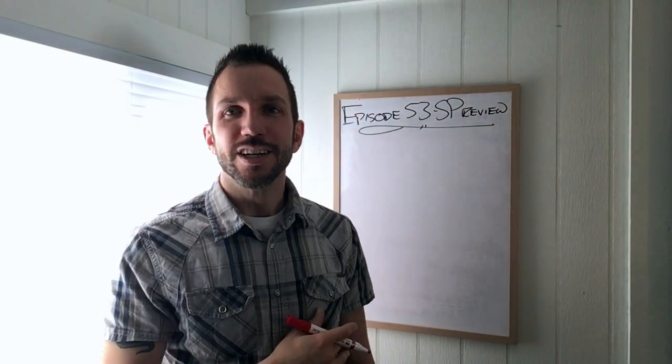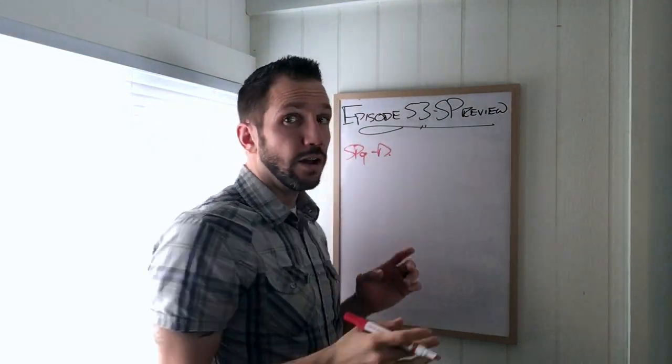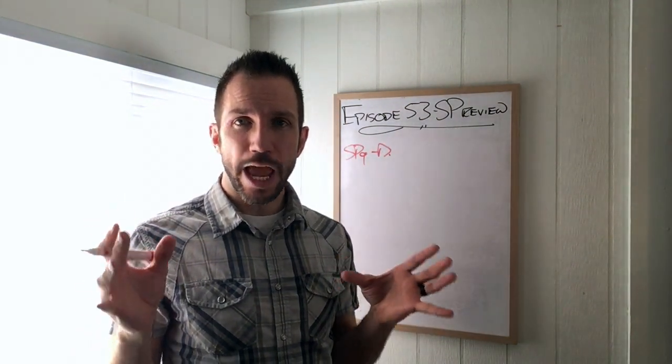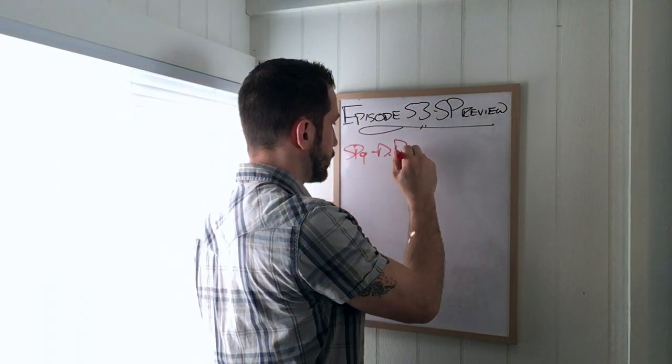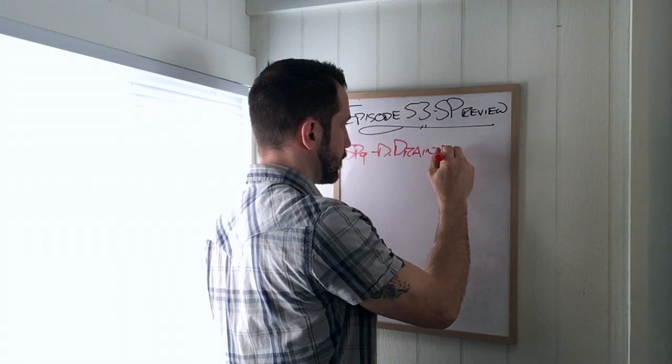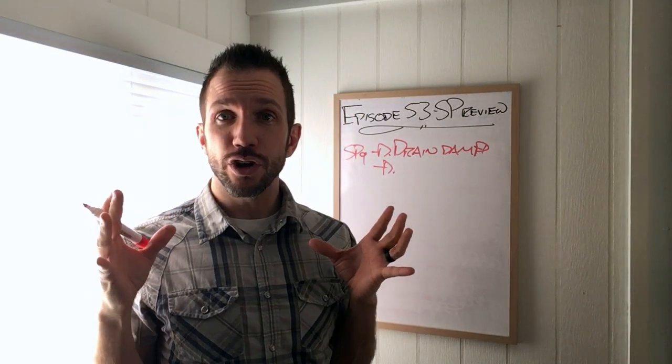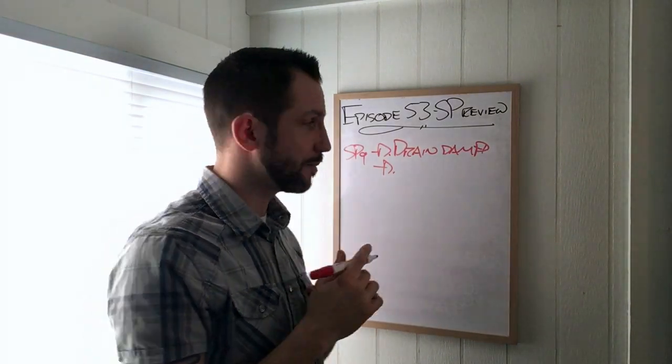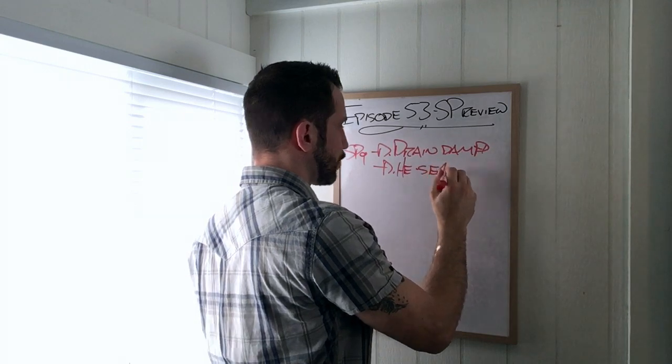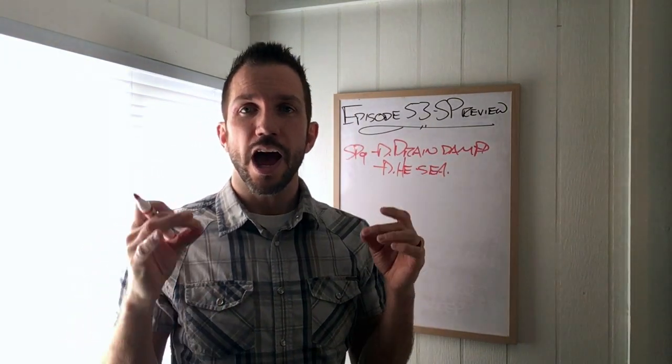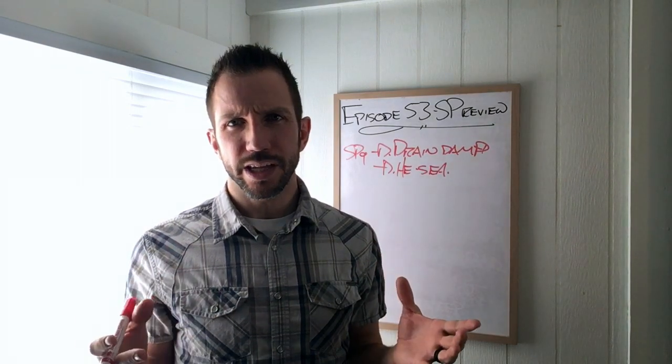All right. Spleen nine. Spleen six definitely does drain dampness, but spleen nine does a little bit better of a job. And it's also the he-sea point for the spleen. And if you recall, he-sea points affect the organ directly. So it just tells the organ, hey, regulate yourself, would you?